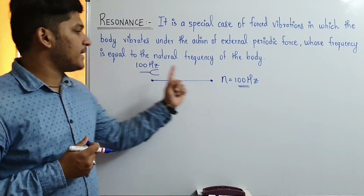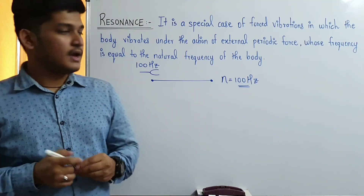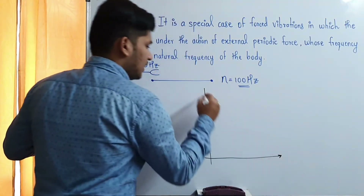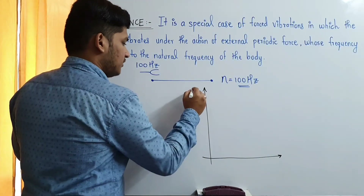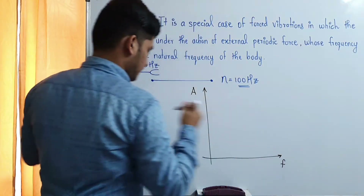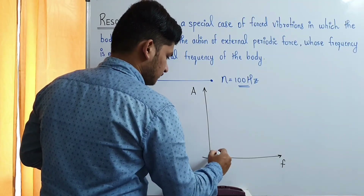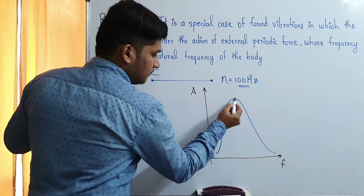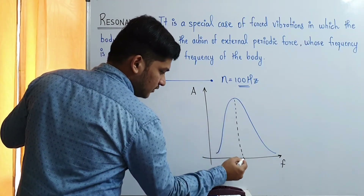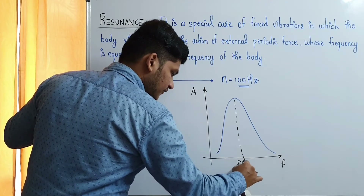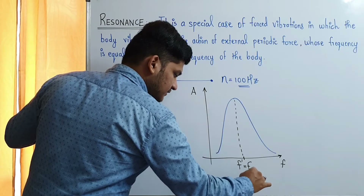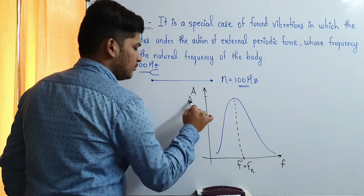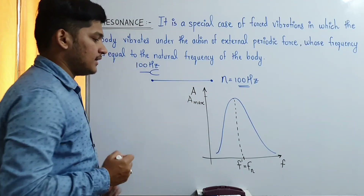When the frequency of the external force matches the natural frequency of the body, the amplitude becomes maximum. If we plot a graph of amplitude versus frequency, at a particular frequency f' — when it matches the natural frequency of the body — we get maximum amplitude of oscillations.